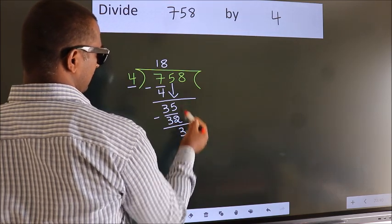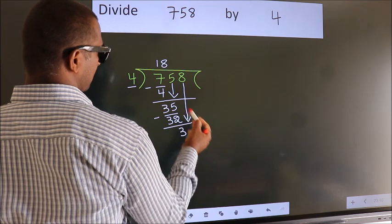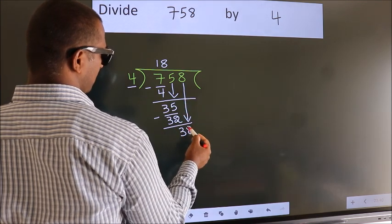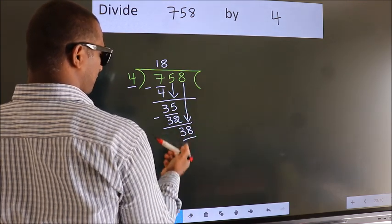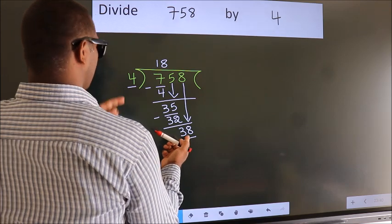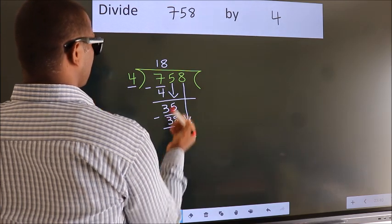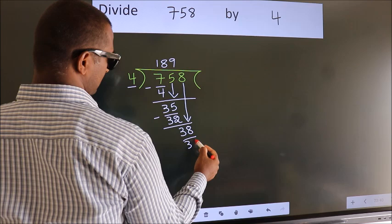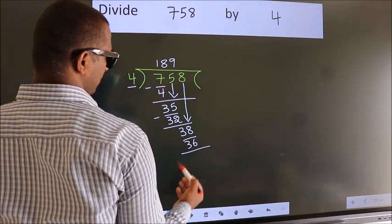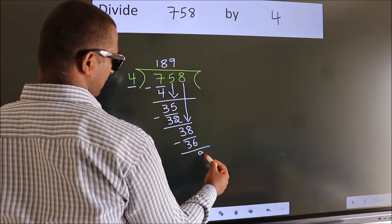After this, bring down the beside number, so 8 down, so 38. A number close to 38 in the 4 table is 4 times 9 is 36. Now we subtract, we get 2.